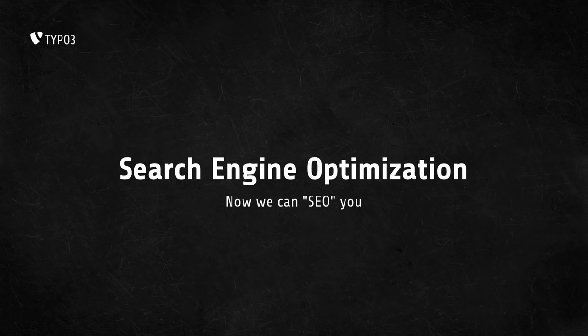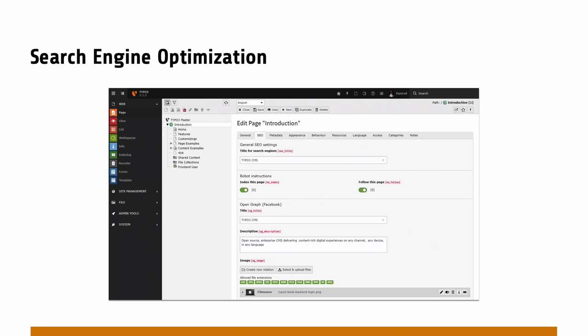So we did quite a few things in terms of SEO, and that's mainly Richard Hazel's work — we love you. So what we now have is in the page properties we have a dedicated SEO tab, which has robot instructions like 'index this page' or 'follow this page.' There's open graph information, Twitter cards, open graph tags, etc., built right within the system.